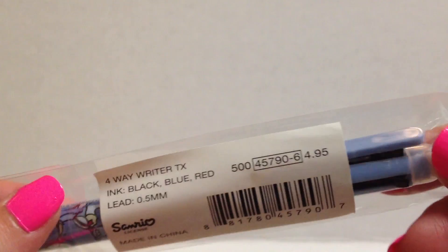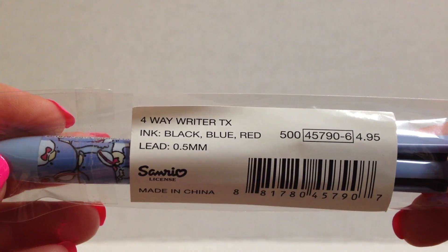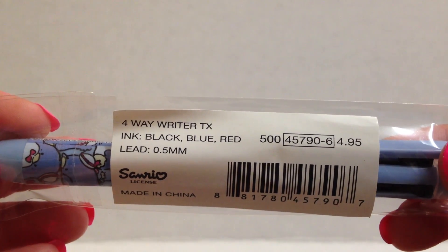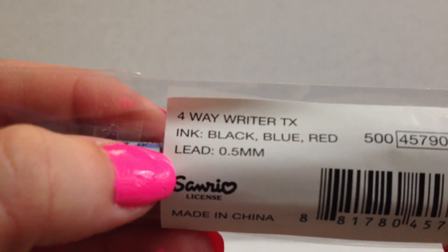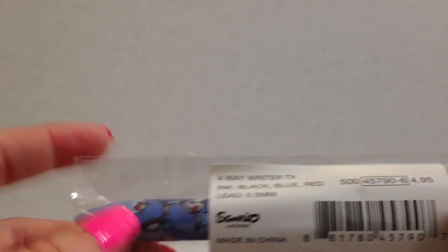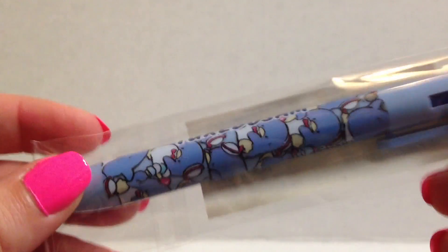Then I got him this Tuxedo Sam pen that has four different colored inks. So it is a four-way writer with black, blue, and red. Oh, there are only three. Wait, why does it say four way? Oh, I think one of them's a pencil. Yeah, one of them's a pencil. So the lead is 0.5 millimeter. So it's a pencil and three colored pens. This would be really cool if you're in school right now. I am not in school, so I don't really need pencils. But if you are in school and you have a Sanrio, this would be really cute to have.